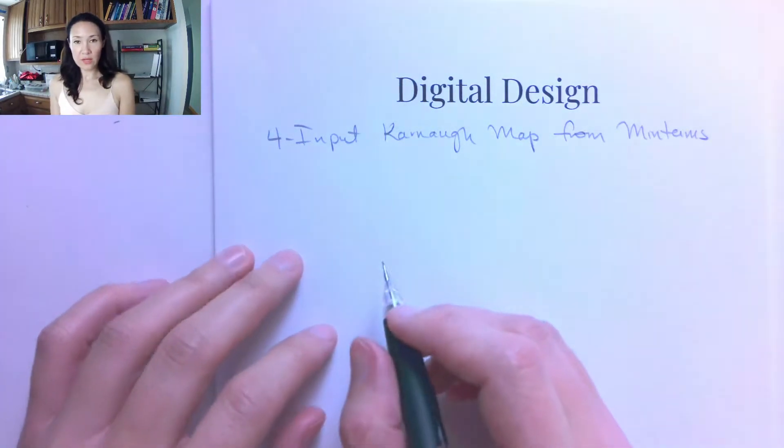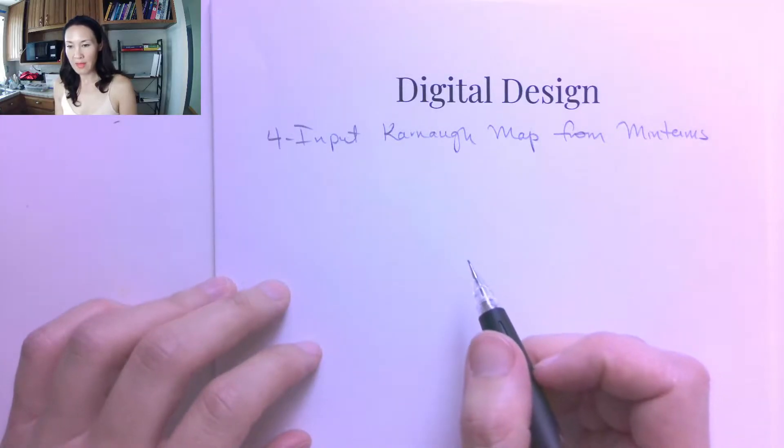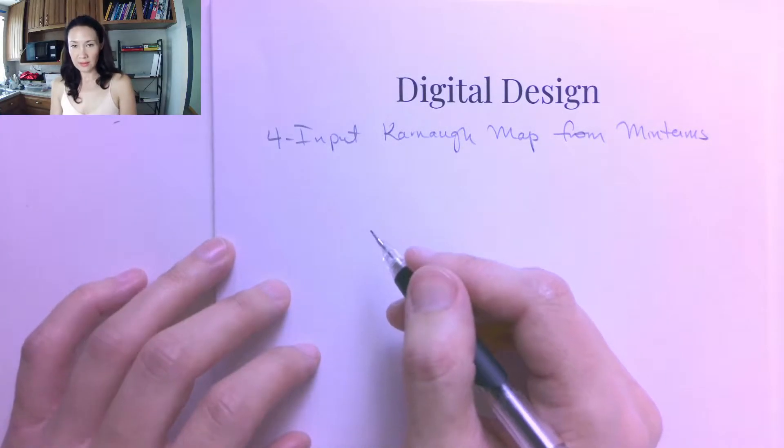I wanted to do another example for you of minimizing a function using a four input Karnaugh map, but this time suppose our function is given to us as a sum of minterms.